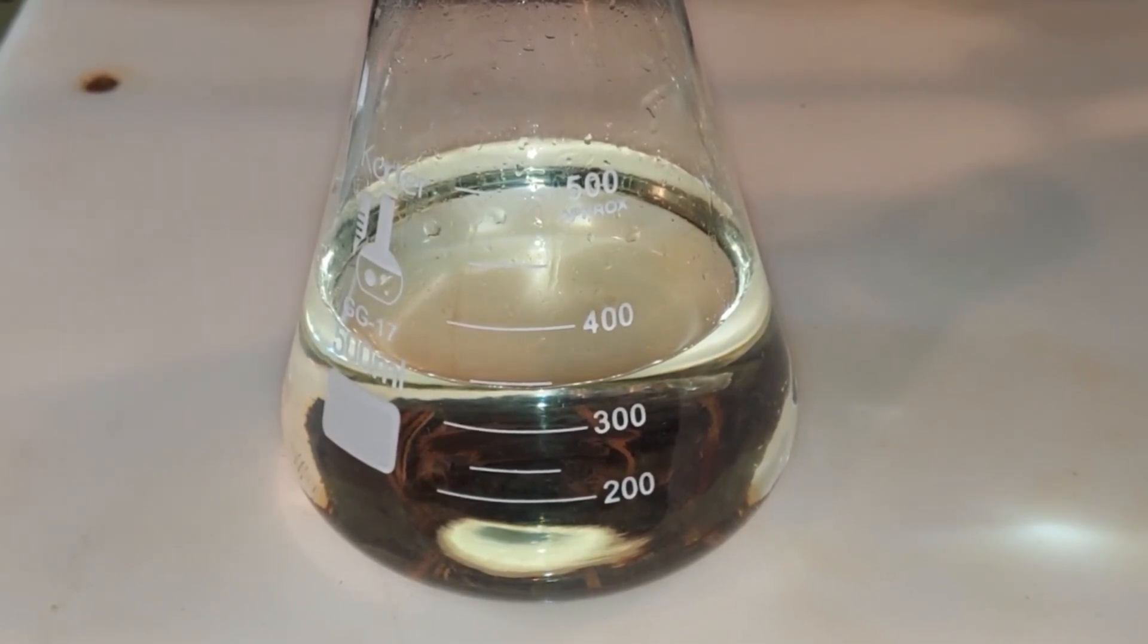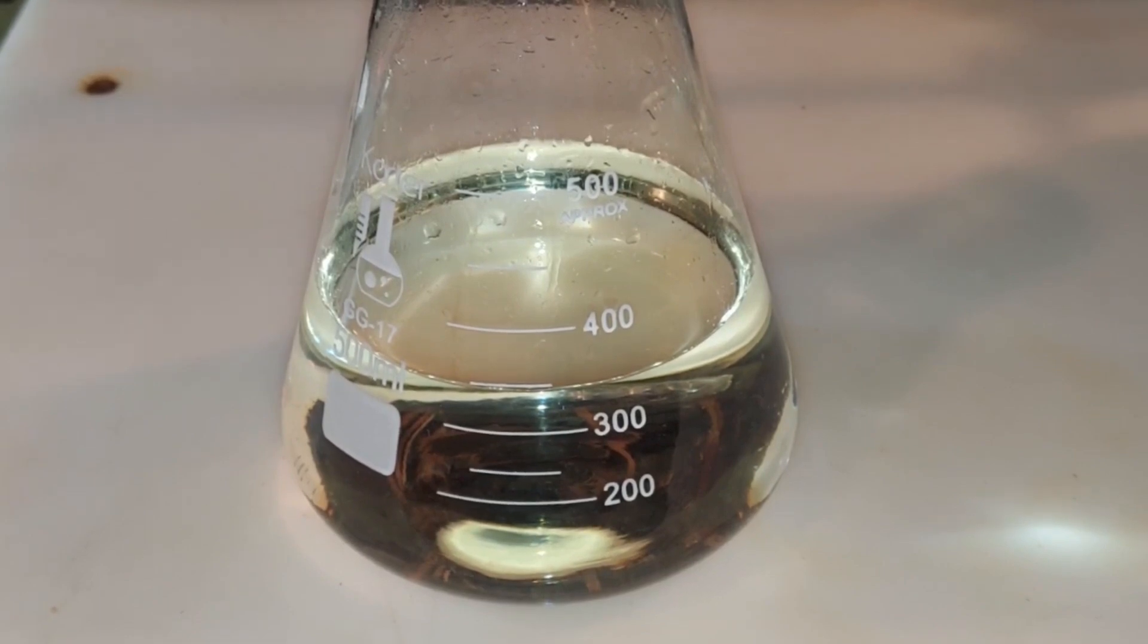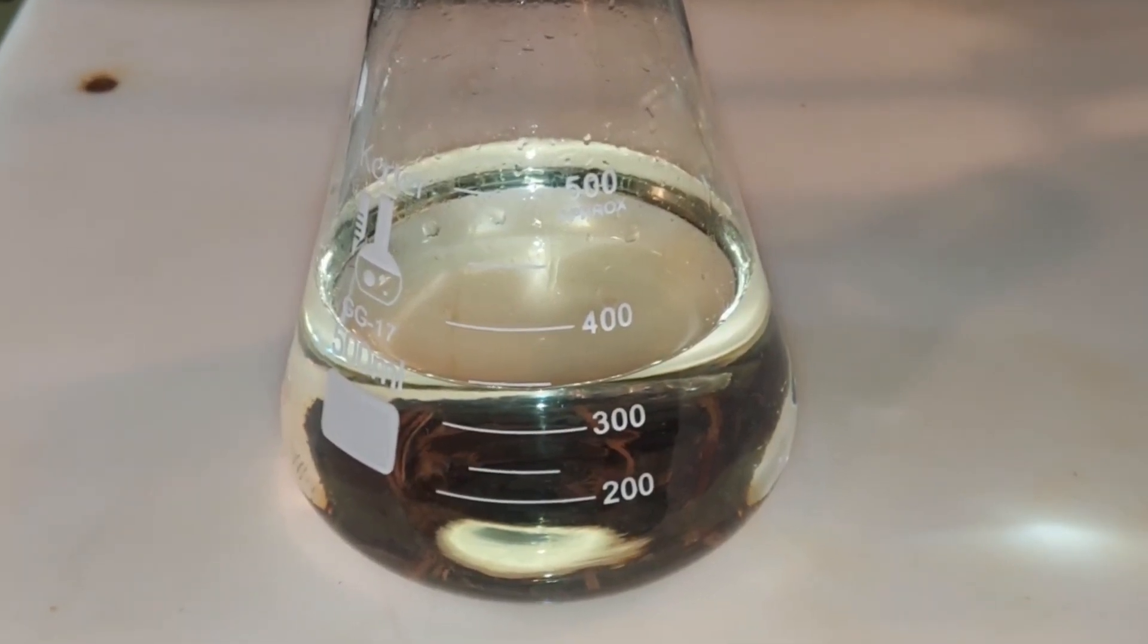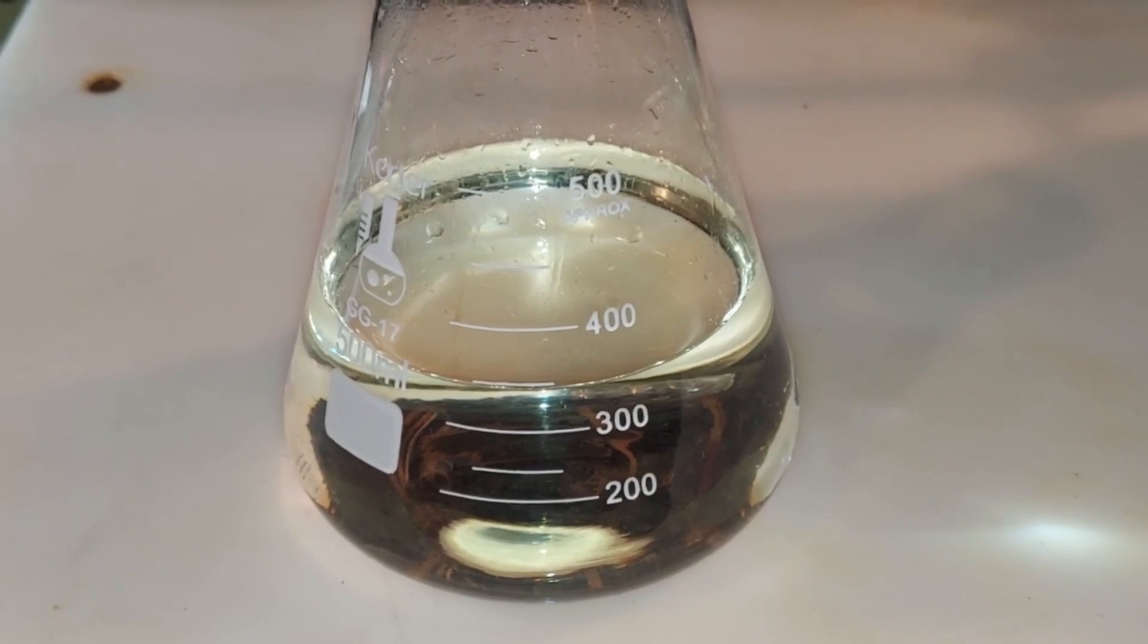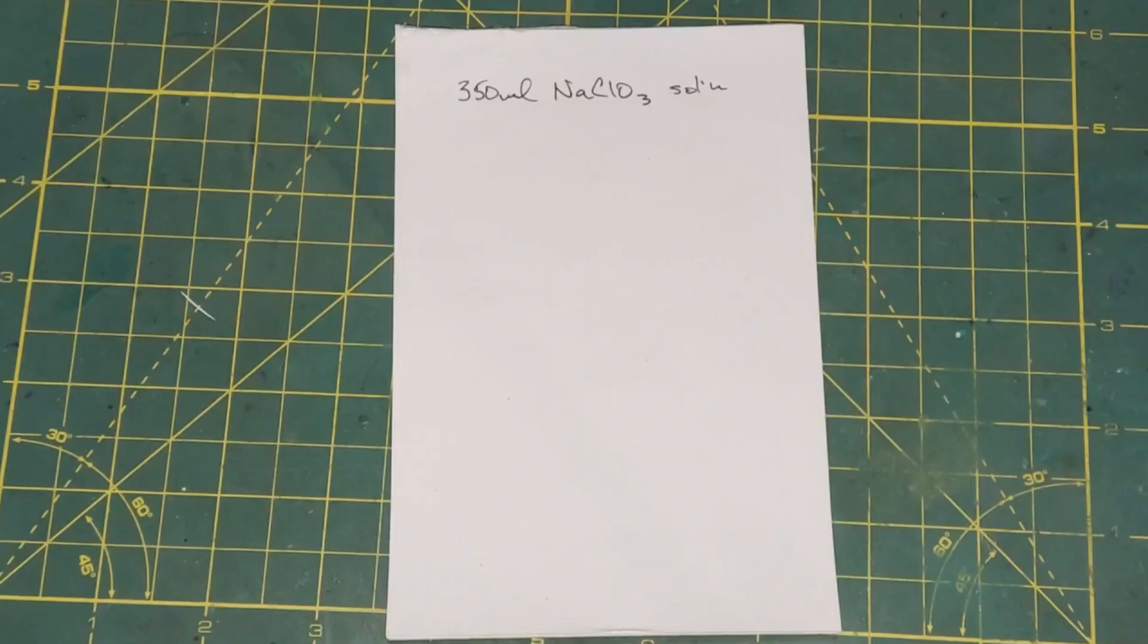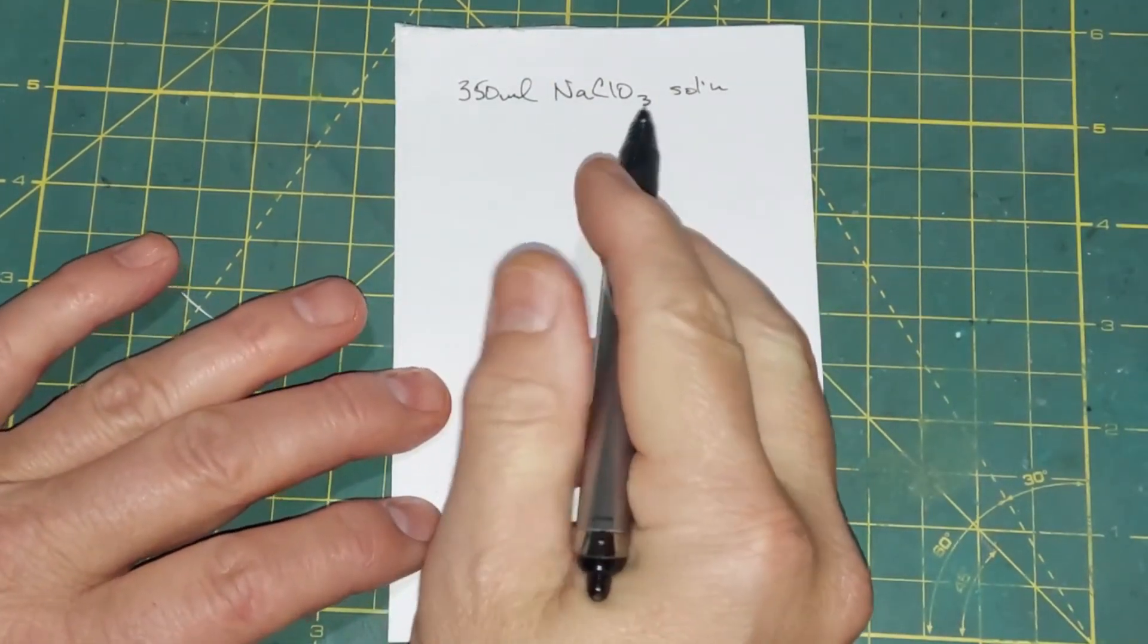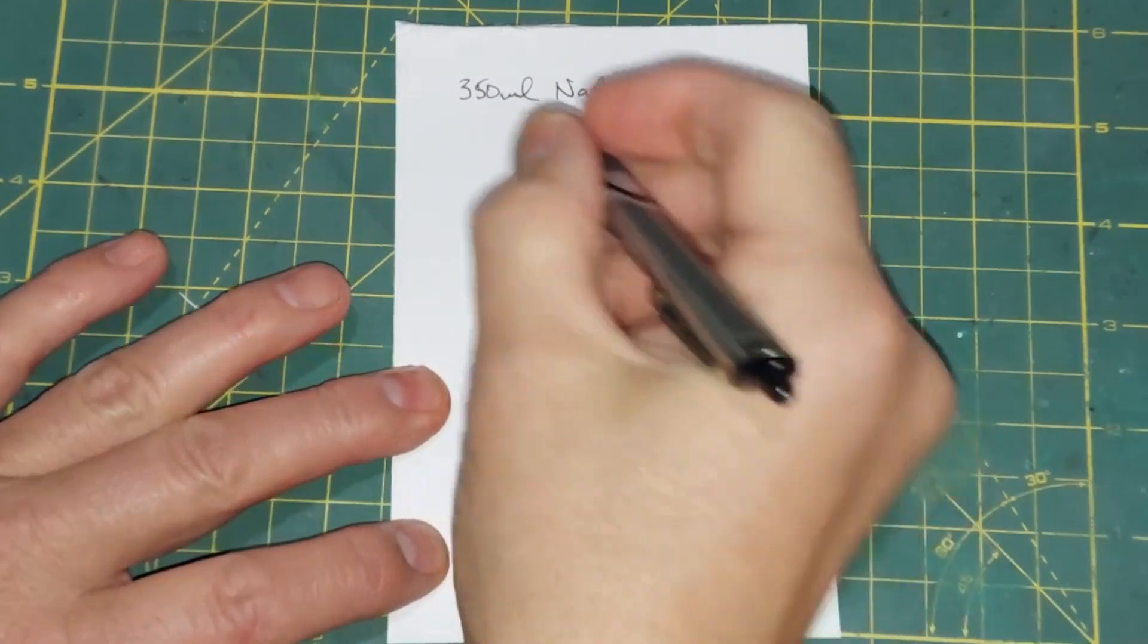Obviously the salt that was in there took up a portion of the volume in the previous beaker. Next I'll be preparing 350 milliliters of a potassium chloride solution. We know we have 350 milliliters of sodium chlorate solution, so now we need to make 350 milliliters of a KCl potassium chloride solution.